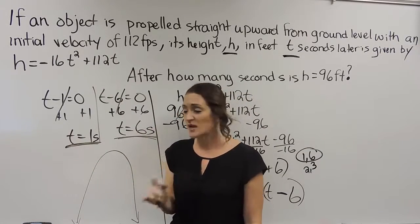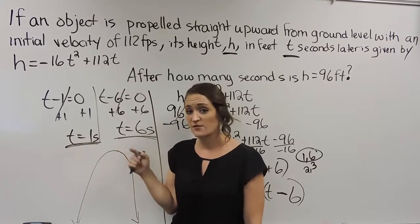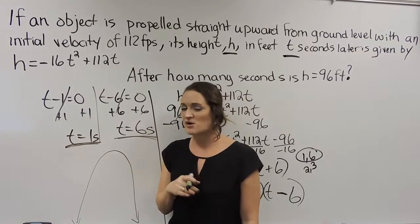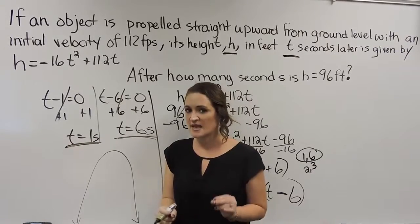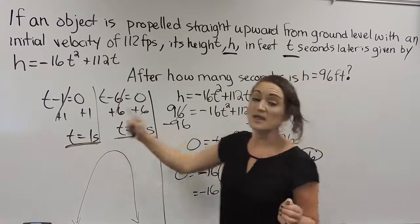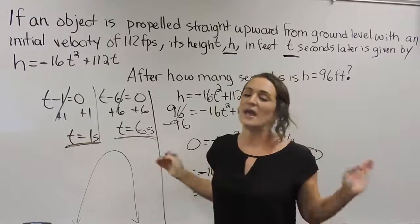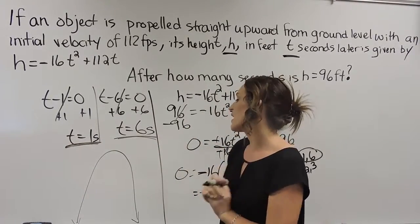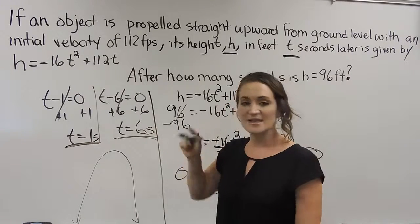Had you happened to get a situation where you would have gotten a negative number for this here, you would have automatically marked that answer choice out because you can't have negative seconds. So in this kind of problem, if you ever get a negative here, you just know, hey, that's not right. You need to go with a positive answer when, if that happens to happen. But for here, it's one second and six seconds.